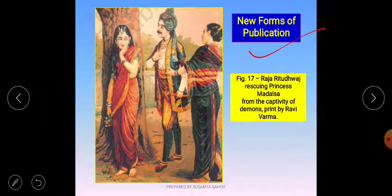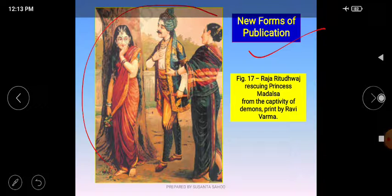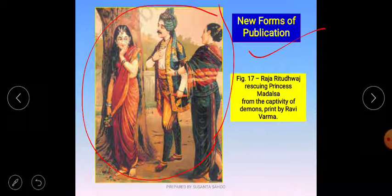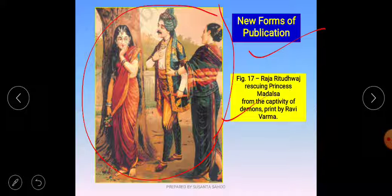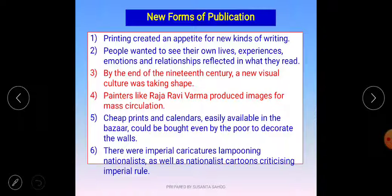These new forms of publication — we are talking about print materials that came to India and different parts of the world. Along with letter printing, image printing also began. You can see figure number 17 in the textbook: 'Raja Ruti Dhvaj rescuing Princess Madalsha from the captivity of demons.' This may be one of the best works of that time, showing how beautifully printing materials were made in the first stage of image printing. This shows the interest of press workers, thinkers, and the demands of the public. Slowly and gradually, development took place in the field of printing presses.